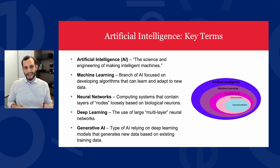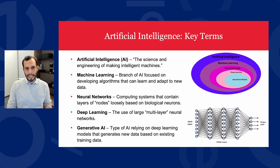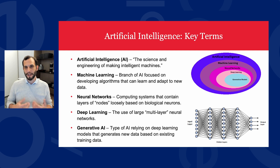A neural network is a type of model for machine learning. The name and structure of neural networks are inspired by the human brain, with artificial nodes that very loosely mimic the way that biological neurons signal to one another. Deep learning is in turn a type of machine learning that is performed with neural networks that have multiple layers of these nodes. Deep learning algorithms are very good at analyzing unstructured data without human oversight.